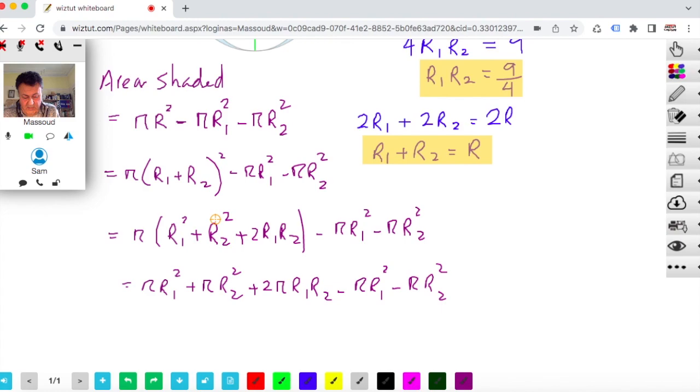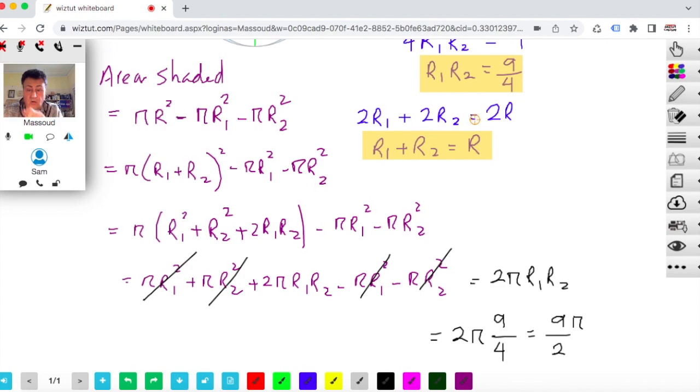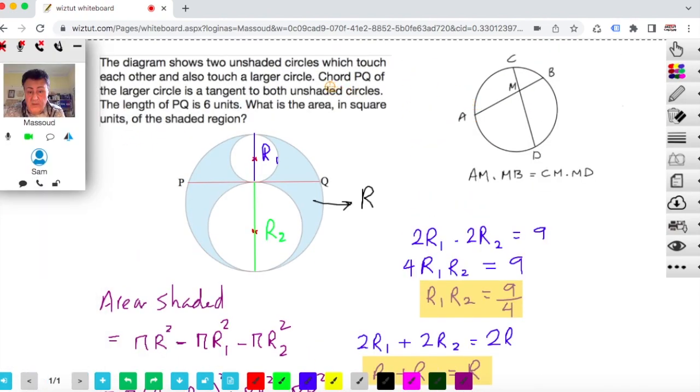Well, it's quite obvious that this is going to cancel with that, that's going to cancel with that, leaving us 2pi R1 R2. But we know that R1 times R2 is 9 over 4. So you're going to get 2pi times 9 over 4. Simplifying this would leave you 9 over 2 pi. And that's the area of that shaded region, the shaded region here.